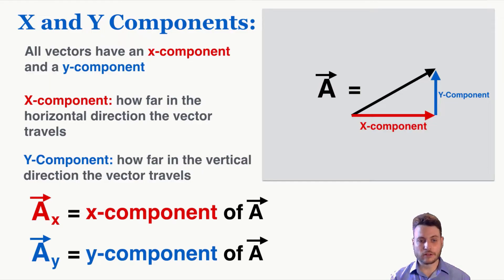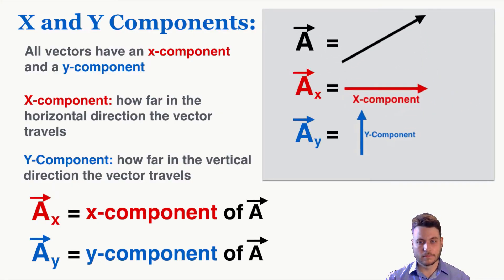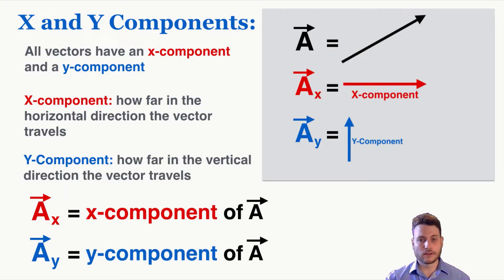And we have this special label for vectors that are x and y components of other vectors. If the original vector is A, the x component of A will be A_x and the y component will be A_y. So we could draw these like this.